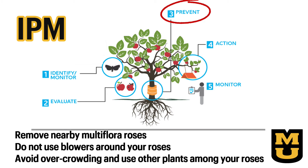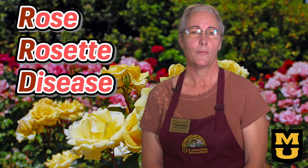Use IPM preventative strategies. Scout your yard, especially if you have a wild area. Remove any invasive multiflora roses within 100 yards — that's a football field away — of your other rose plantings. Minimize the use of leaf blowers around your rose plantings to help keep any mites that may be there in place. Don't overcrowd your plantings. Intermix other plants to provide a break between your roses. Keep your roses healthy with proper cultural care, which includes watering, pruning, fertilization, and cleanup.